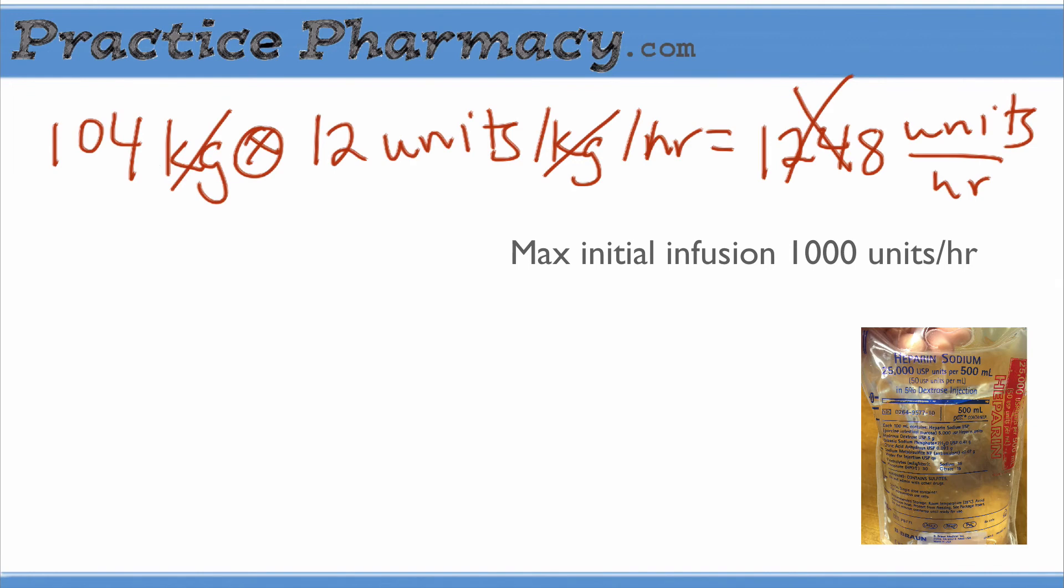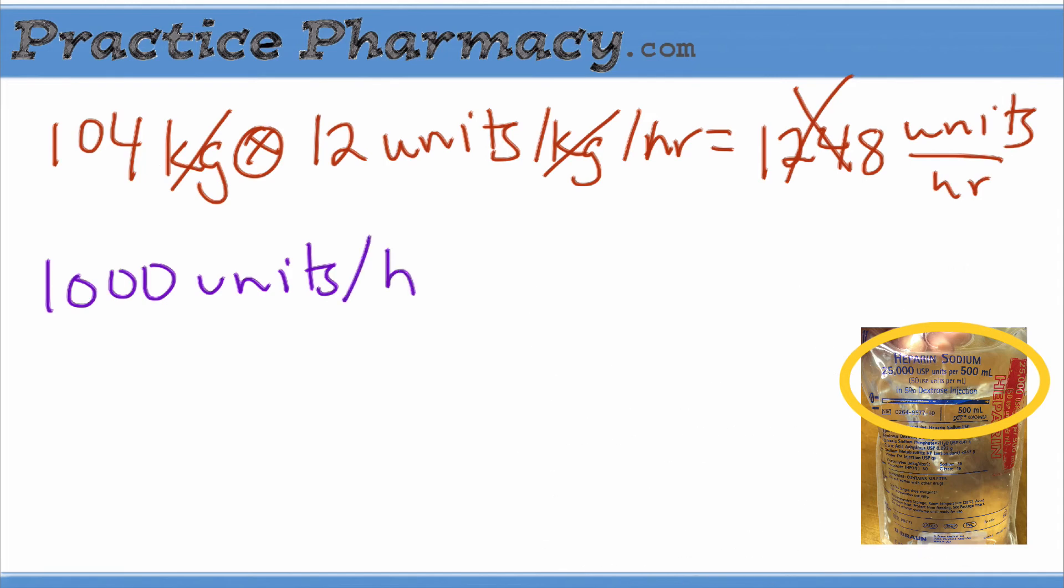Now we need the concentration. It's provided in the order, but we can double check with the label on the pre-mix bag. We'll take 1,000 units per hour as the maximum initial infusion rate, and multiply by the concentration so that the units cancel out the way we want them to. So 500 milliliters has 25,000 units of heparin.